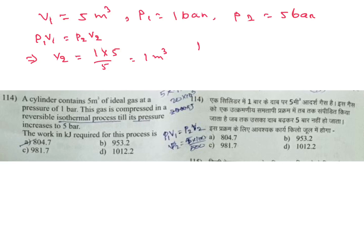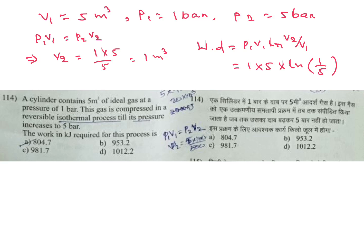Work formula for isothermal process: W = P1 V1 ln(V2/V1). So P1 is 1, V1 is 5, into ln(V2/V1) which is ln(1/5). Since it is a compression process, a minus sign will come.